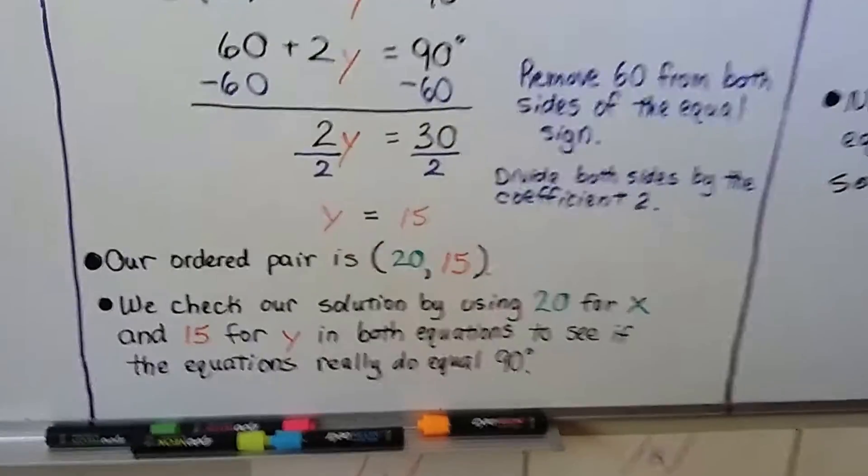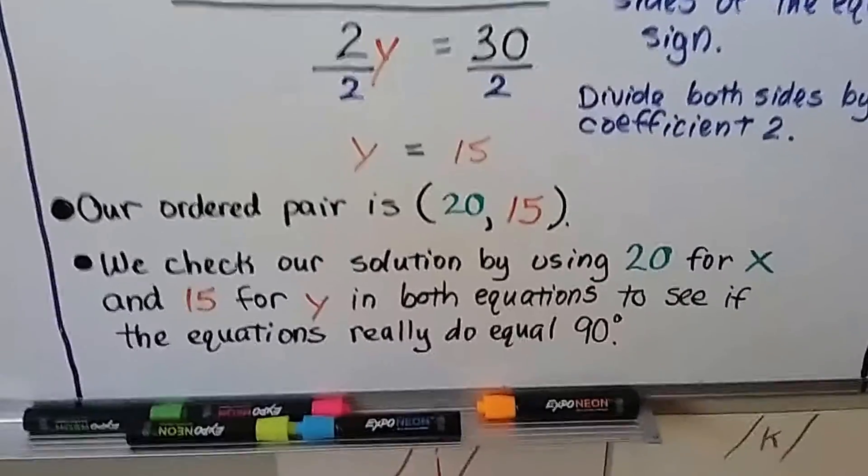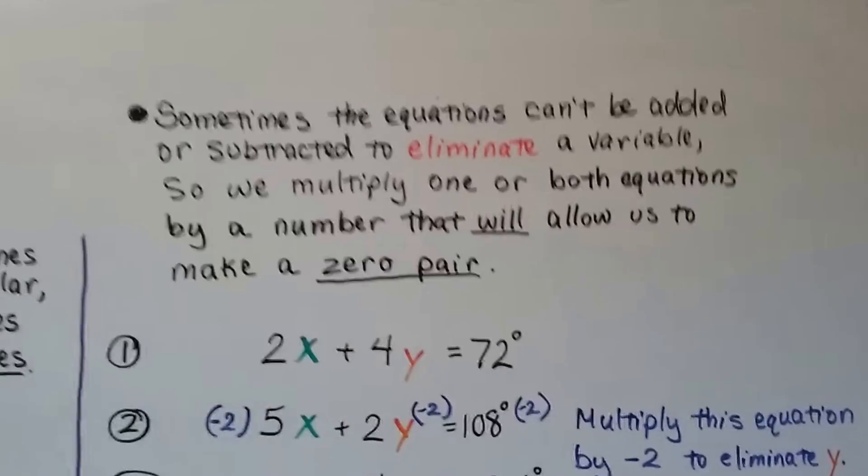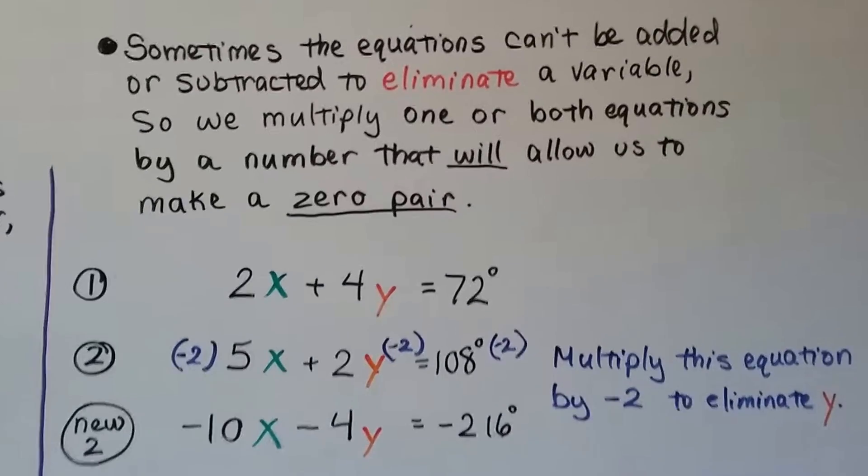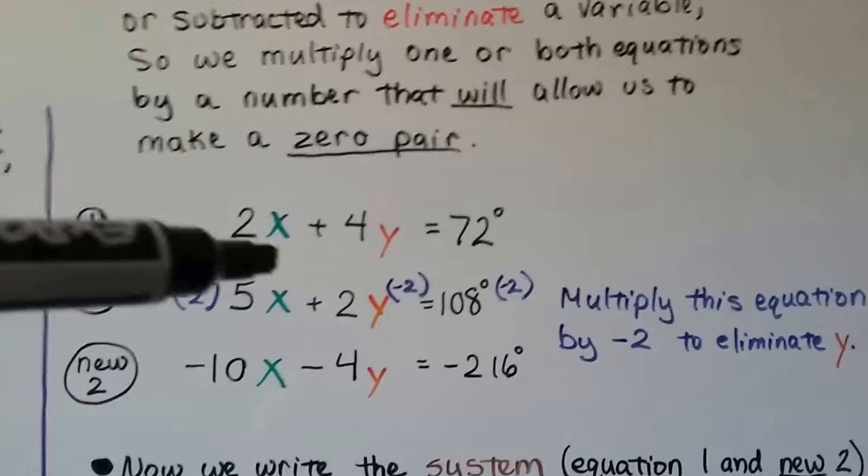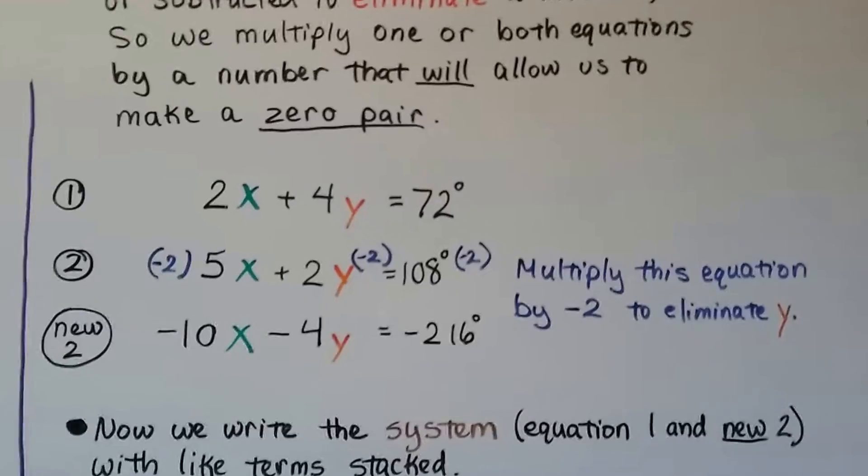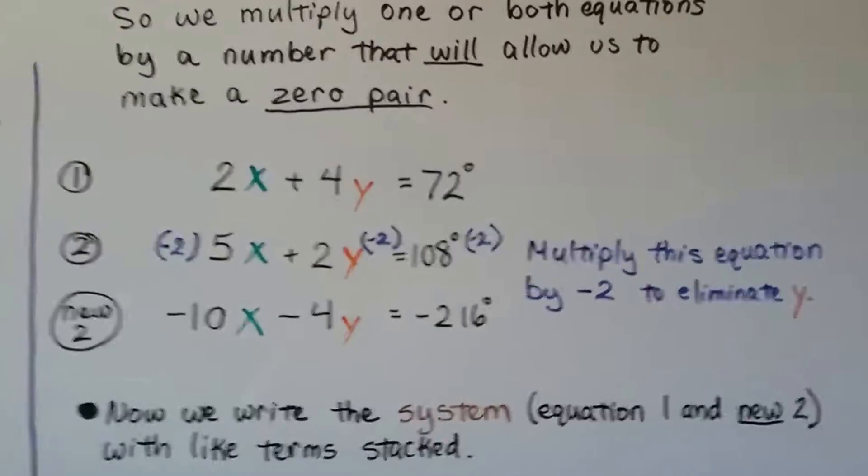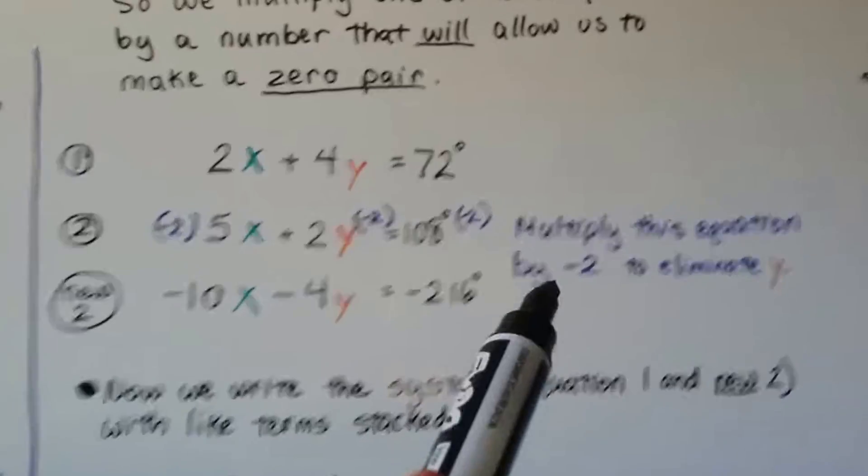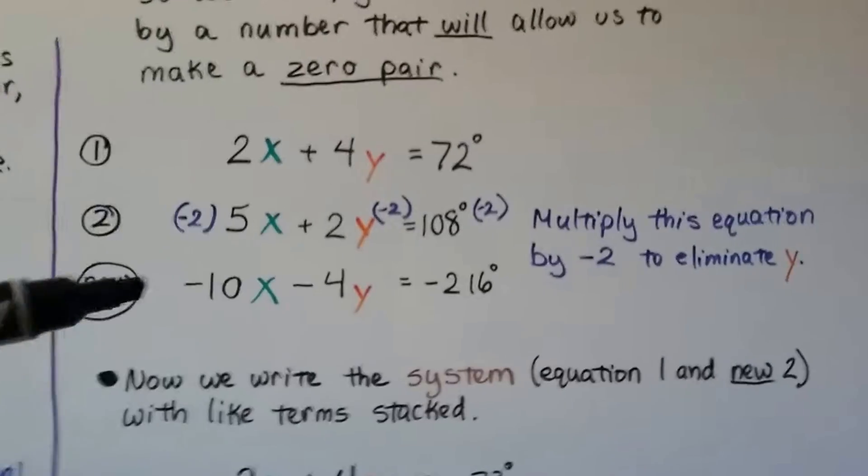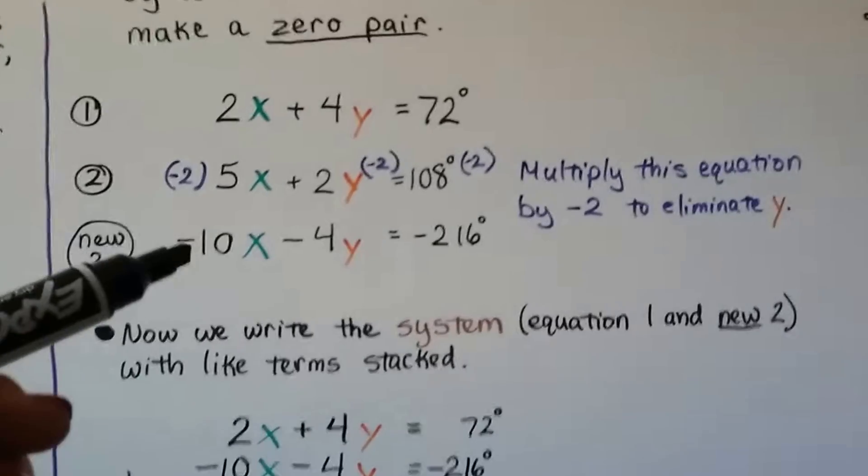And we check our solution by using 20 for x and 15 for y in both equations to see if the equations really do equal 90 degrees. I'll show you an example of checking it in a minute. Sometimes the equations can't be added or subtracted to eliminate a variable, so we multiply one or both equations by a number that will allow us to make a zero pair. If we've got 2x plus 4y equals 72 degrees, and we've got 5x plus 2y equals 108 degrees, we need to change one of these into a zero pair. And we can make this 2y, this positive 2y, change into a negative 4y if we multiply every term by a negative 2. Then we'll have a negative 10x minus 4y equals negative 216 degrees. So now we have a new second equation.